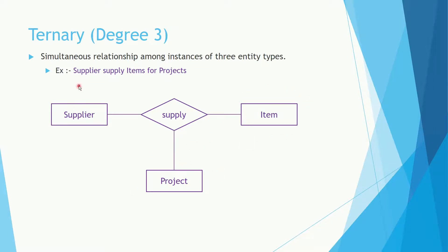The ternary relationship type involves three entity types. For example: Supplier supplies items for projects. The three entity types involved are Supplier, Item, and Project.